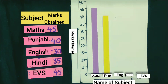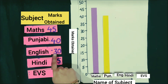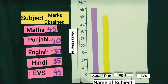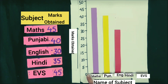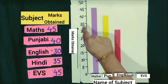Students, the next subject is English. In English, he got 30 marks. So the length of the rectangular bar of English subject is from 0 to 30. In Hindi, he got 35 marks. So the length of the rectangular bar of Hindi subject is from 0 to 35.